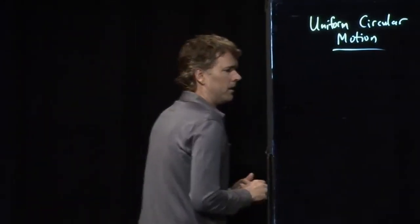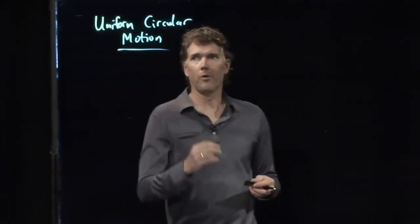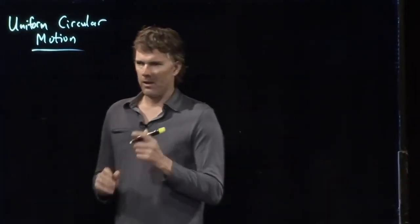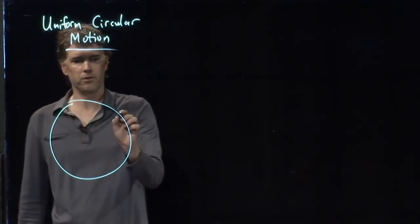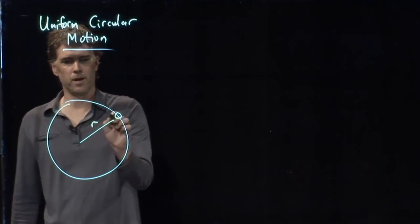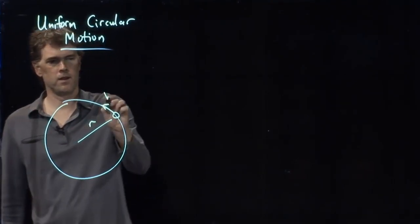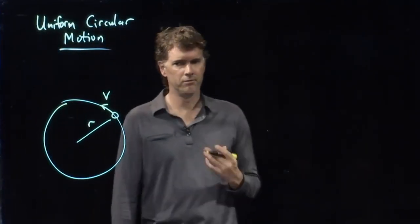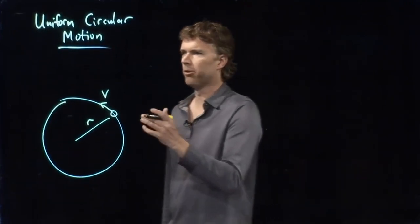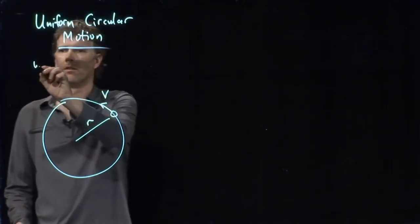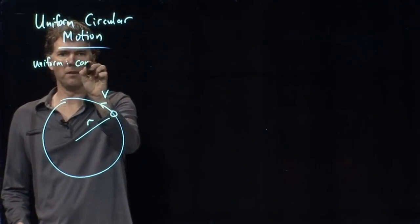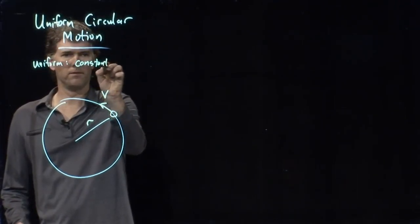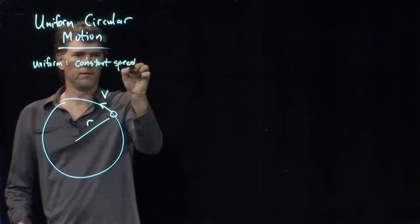So let's talk about uniform circular motion. Uniform circular motion is just this. Something is moving in a circle of radius r and it's moving at a speed v. Uniform means constant speed.